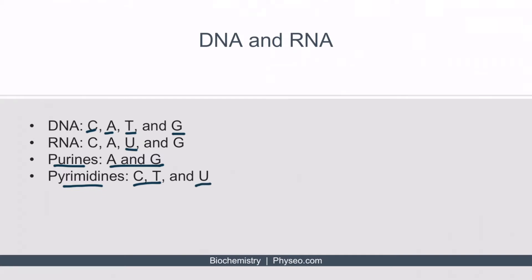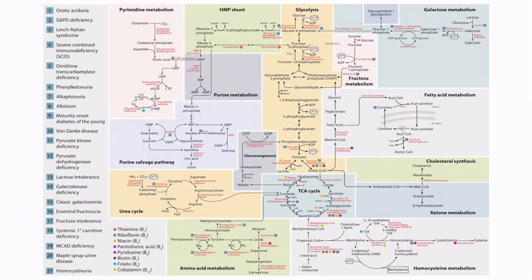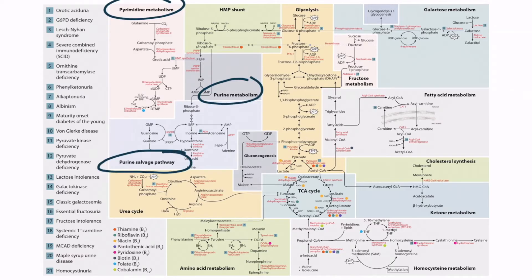In this lecture we'll be discussing the synthesis of purines and pyrimidines. This is the metabolic map provided in section 1 of Metabolism. In this video we're focusing on purine and pyrimidine synthesis — these pathways can be seen right here. We'll also be discussing the purine salvage pathway.